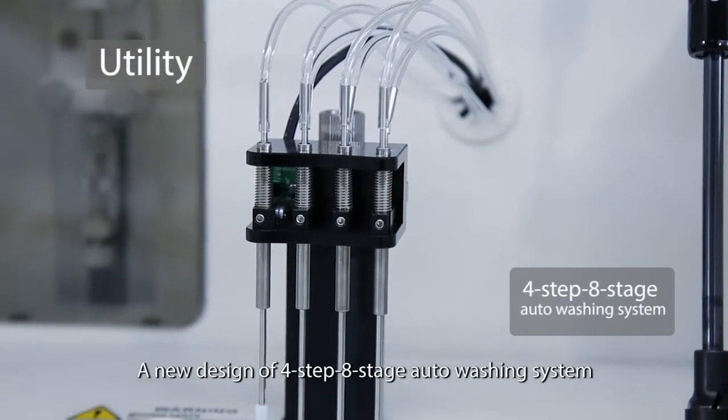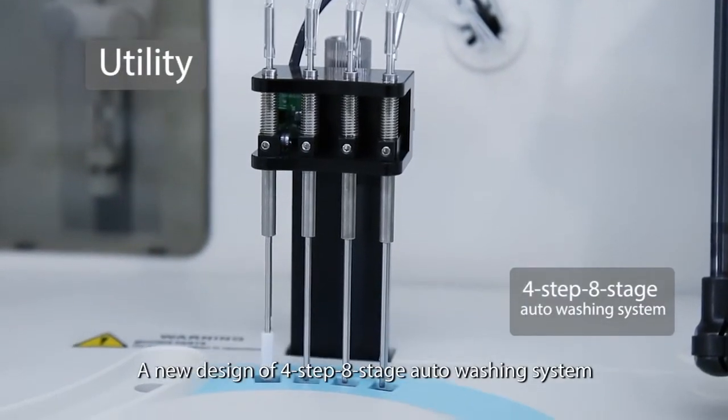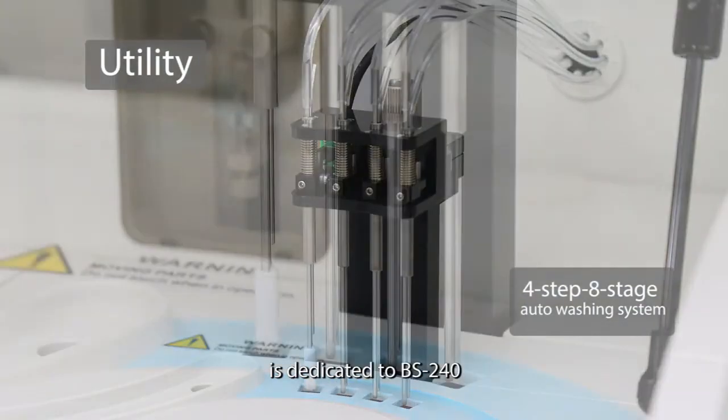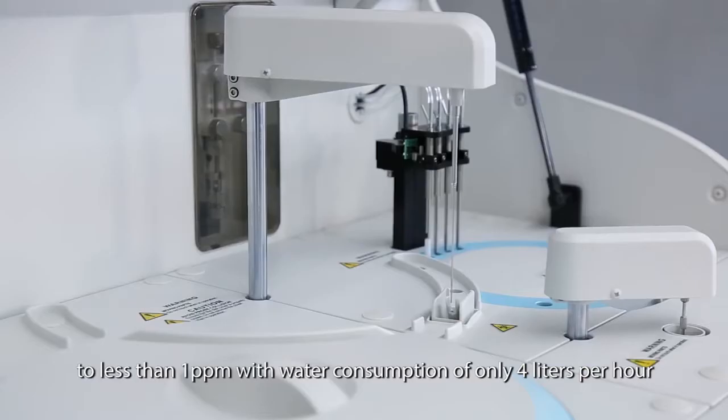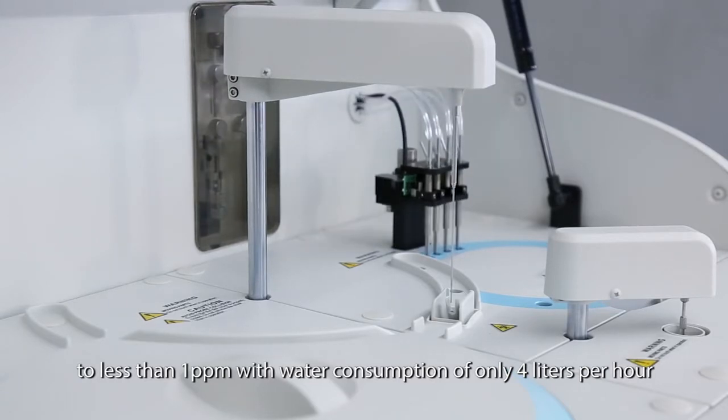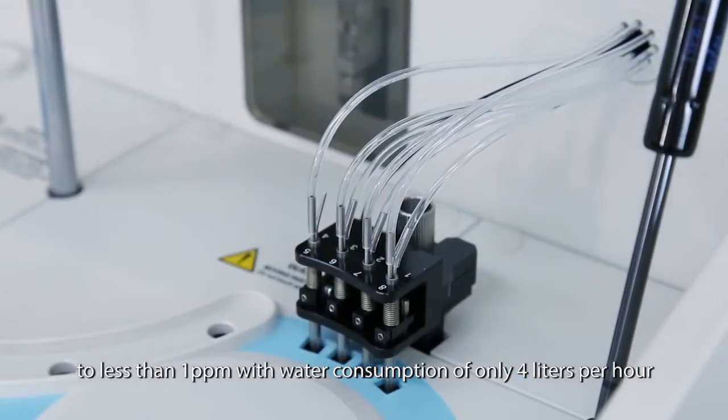A new design of four steps, eight stages, auto-washing system is dedicated to BS240. This advanced washing station minimizes the carryover to less than one part per million, with water consumption of only four liters per hour.